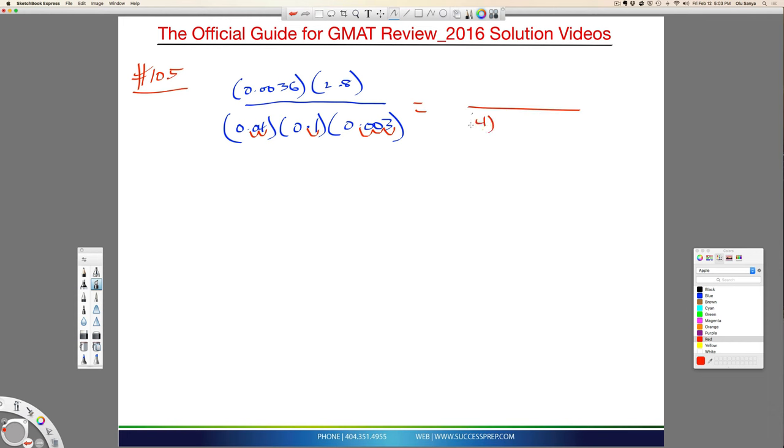Watch what happens. This is now 4, this is now 1, and this is now 3 - removing 2 decimals here, 1 decimal there, and 3 here, for a total of 6 moves. I need to do the same 6 at the top: 1, 2, 3, 4, 5, and an extra one - 6. Because if I did 6 moves at the bottom, I have to do the same at the top for everything to balance out. So at the top, I now have 36 and 280.